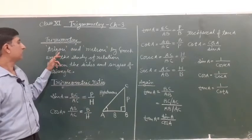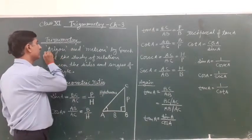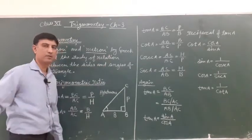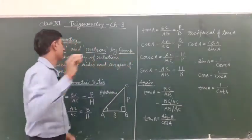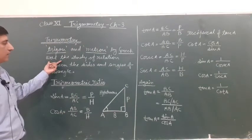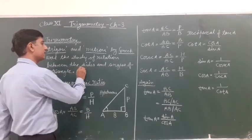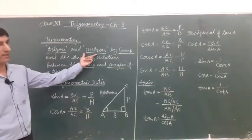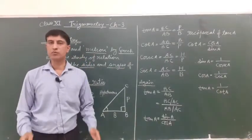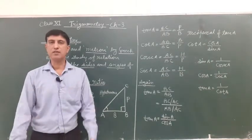The words Trigon and Metron are given by Greek word and it is related to sides and angle of triangle. So this Trigon and Metron means that if any triangle is there, its side and angle is studied.